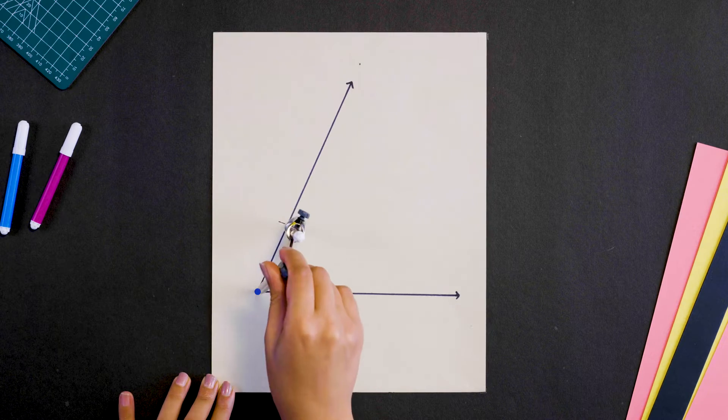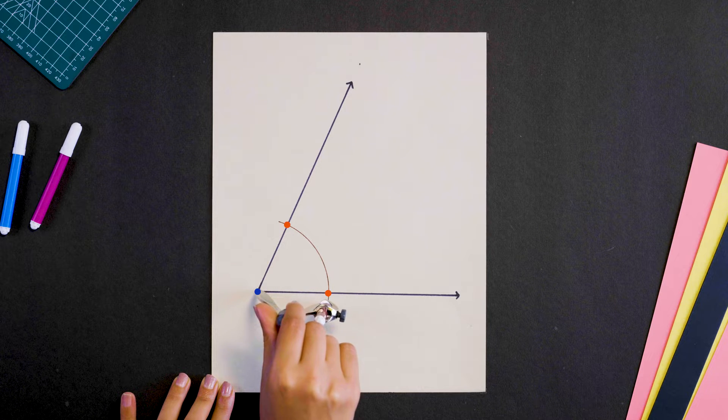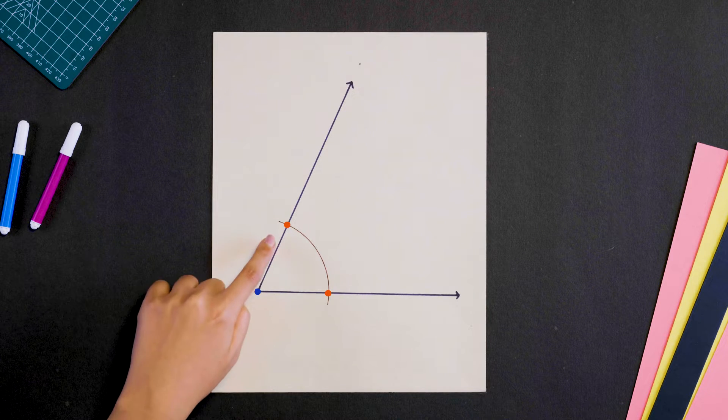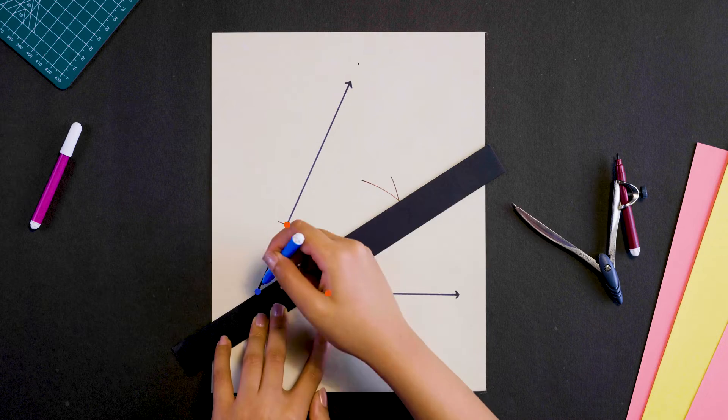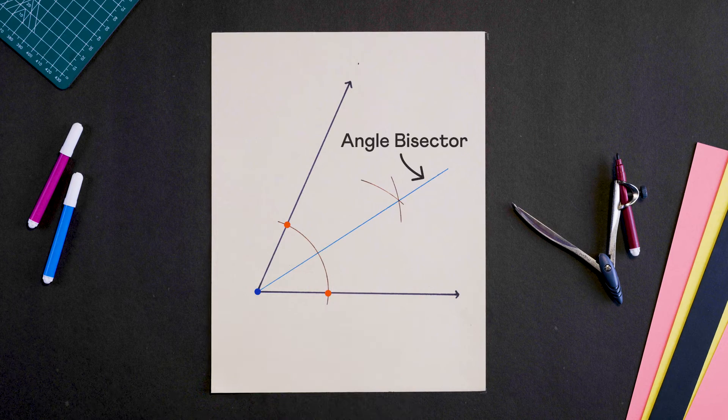Using the vertex as the center, draw an arc intersecting the arms of this angle. Now from these two points, draw two arcs with equal radii. And that's the angle bisector.